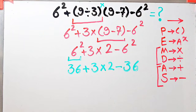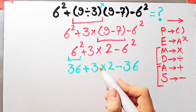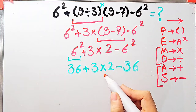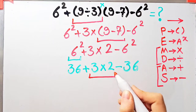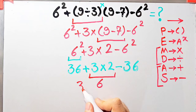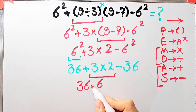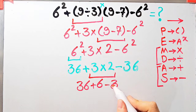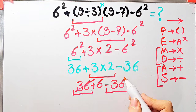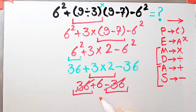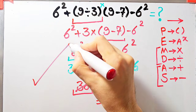Now we have addition, multiplication, and subtraction. First we simplify the multiplication: 3 times 2 equals 6. Now the question is 36 plus 6 then minus 36. Simplifying, the final answer of this question equals 6.